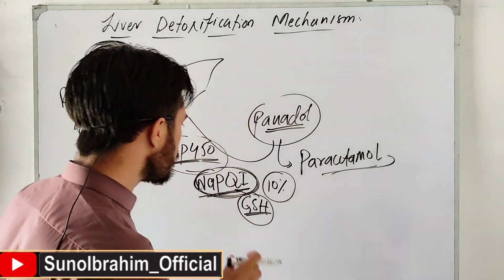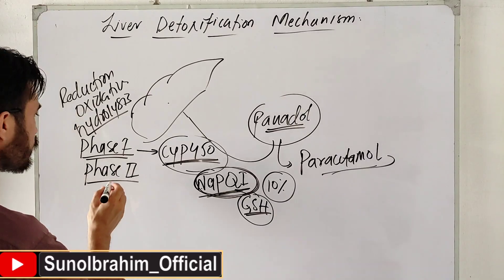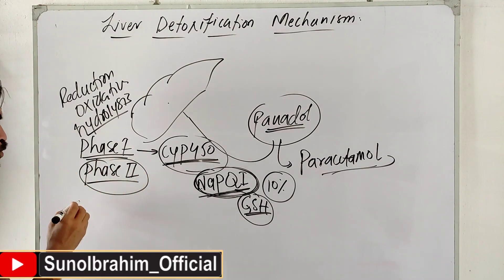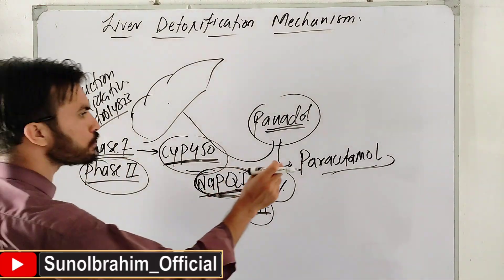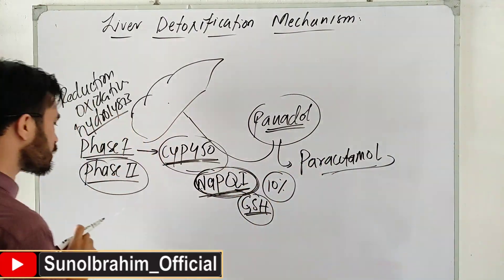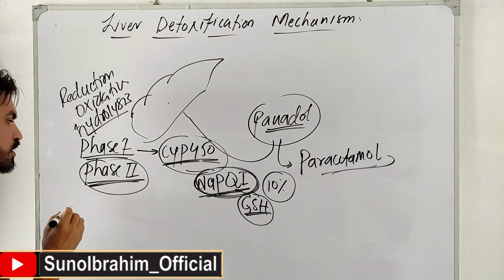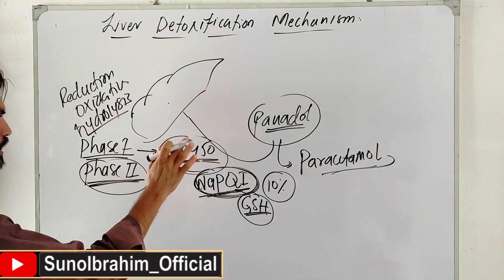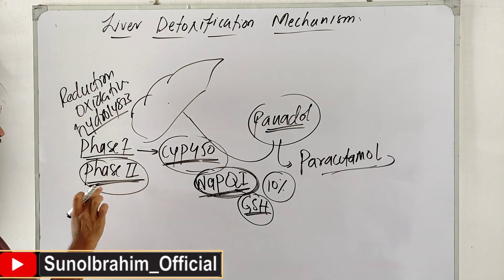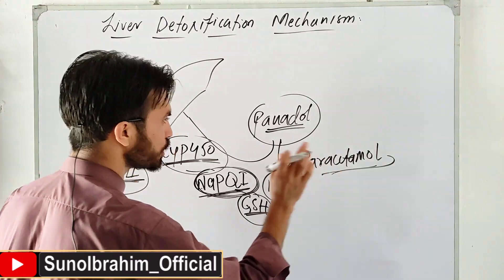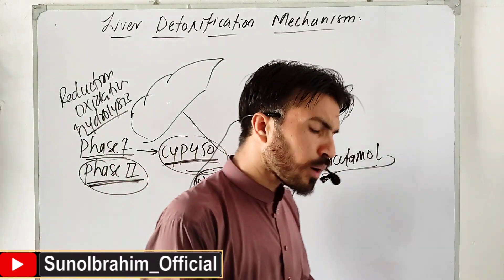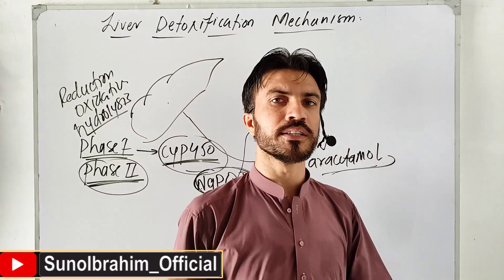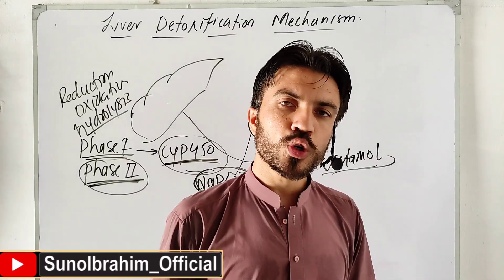In Phase Two, Glucuronic acid reacts with Paracetamol, or sulfate groups attach to it, or methyl groups attach. This process uses specific Phase Two enzymes. After detoxification, the liver processes the molecule to make it ready for excretion. Paracetamol should not destroy your liver.